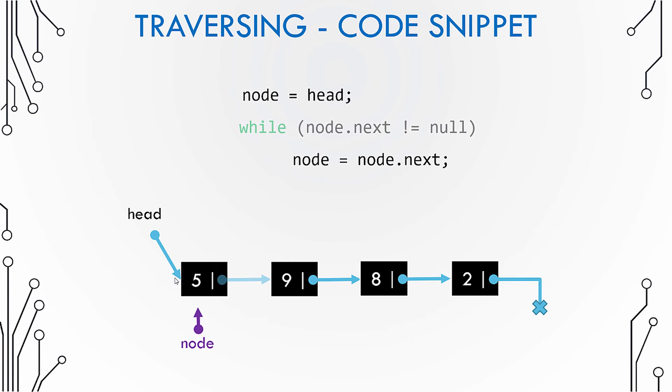So here in this case a pointer exists and it points to the next node. Hence we go inside the while loop and then move our node pointer to the next node. Once you move, you can access the value of this node.